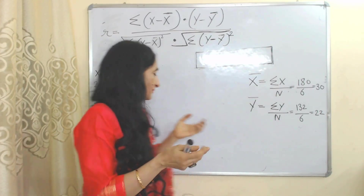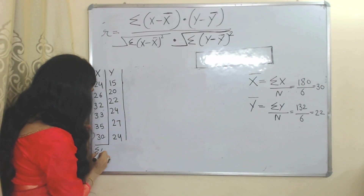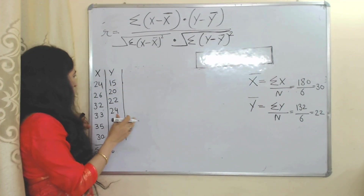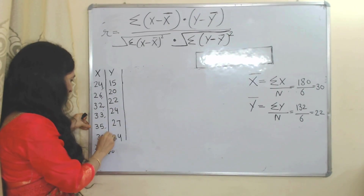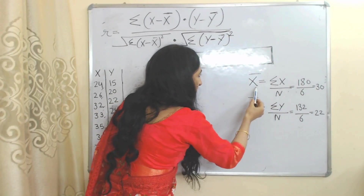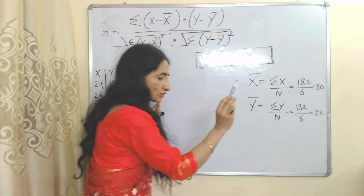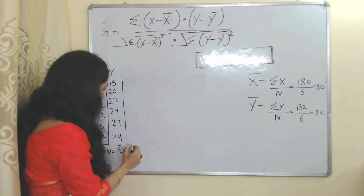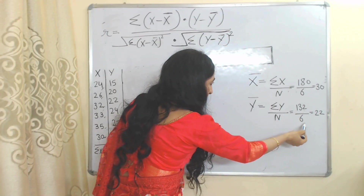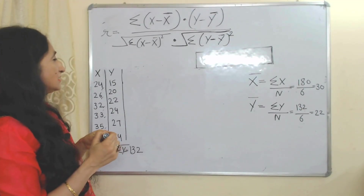When we add all values of x, it becomes equal to 180. The number of items n equals 6. So 180 divided by 6 gives us the value of x̄. Similarly, when we add all values of y it equals 132, and 132 divided by 6 equals 22, which is the value of ȳ.